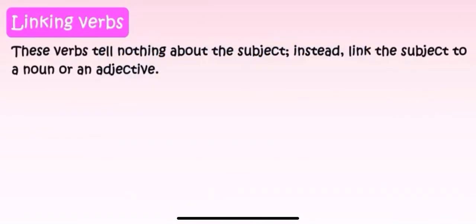Next, as you have seen action verb, now let us see the linking verbs. What are linking verbs? These verbs tell nothing about the subject. Linking verb doesn't tell about subject. Instead, it links the subject to noun or an adjective. Linking verb links the subject to either a noun or an adjective.